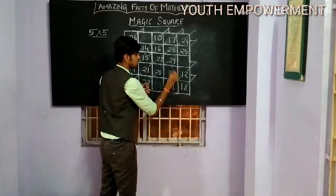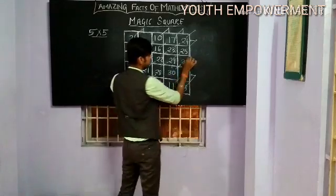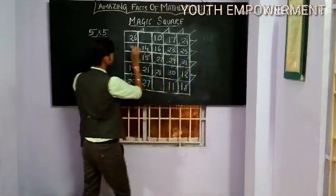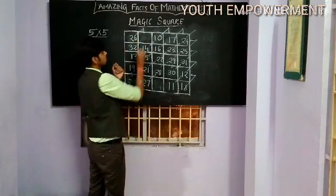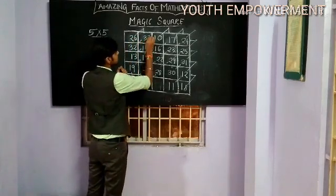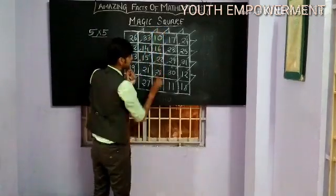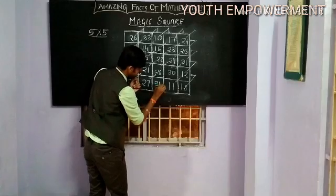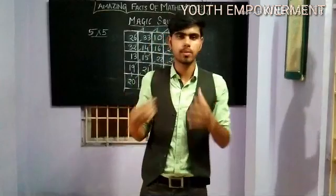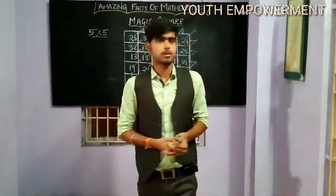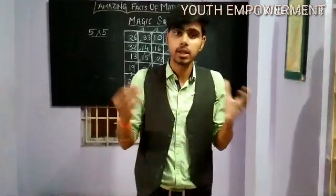Rightward diagonal: 31. Rightward diagonal — move to the left, there is an empty box. Rightward diagonal: 32. Rightward diagonal to the bottom: 34. This is how we create the 5x5 magic square. The properties of this 5x5 magic square are pretty interesting too.